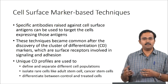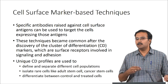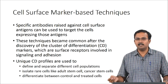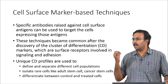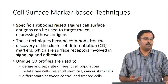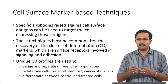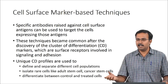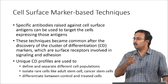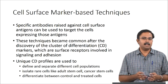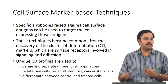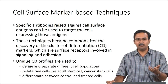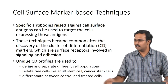Another factor used for cell separation is cell surface markers, used for very specific separation. Antibodies are raised against cell surface antigens to target cells expressing those antigens. These techniques became common after the discovery of CD markers — cluster of differentiation markers — which are surface receptors involved in signaling and adhesion. Unique CD profiles can be used for defining and separating different cell populations, and even for confirming cell type identity after isolation.